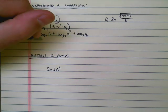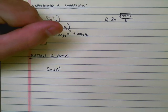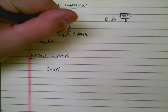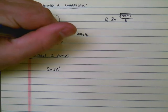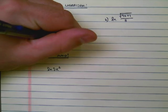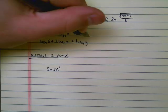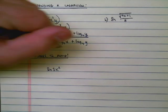And so my final answer is going to be log base 4 of 5 plus, and I take this 3 and I write that out in front, 3 times the log base 4 of x plus log base 4 of y. And that's going to be my final solution. I just expanded it.